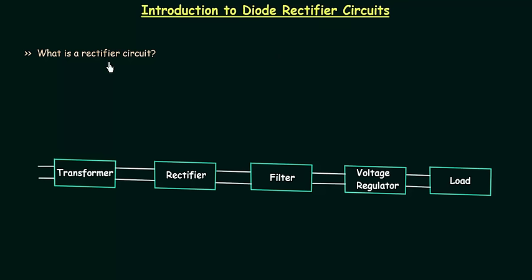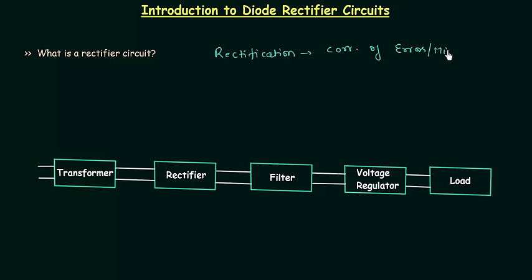So what is a rectifier circuit? A rectifier circuit is a circuit which rectifies AC voltage. By rectification we mean correction of errors or mistakes — this is the general meaning of rectification. When you rectify, that is correct, AC voltage, you get DC voltage.